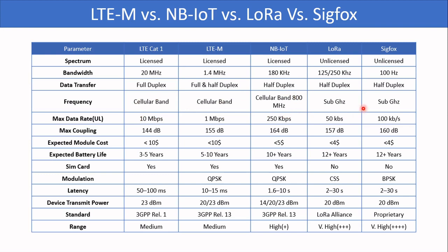The first three operate in the cellular band, and the last two operate in the sub-gigahertz band which is free, while the cellular bands are paid. The data rate decreases from LTE CAT1 to Sigfox: from 10 Mbps down to 100 kbps; for NB-IoT it is 250 kbps. Module cost also decreases moving from left to right. Battery life increases as speed decreases, giving very good battery life for NB-IoT, LoRa, and Sigfox. The cellular networks require a SIM, whereas LoRa and Sigfox do not. The latency for LTE CAT1 is 50–100 milliseconds, for NB-IoT it is 1.6–10 seconds, and for Sigfox it is 2–30 seconds.